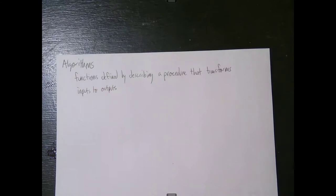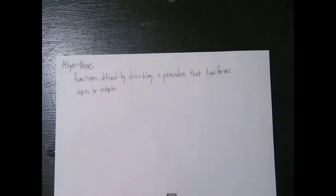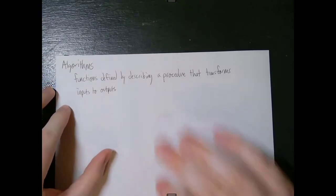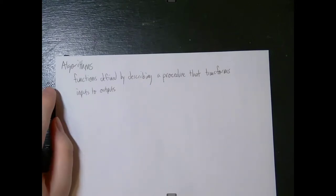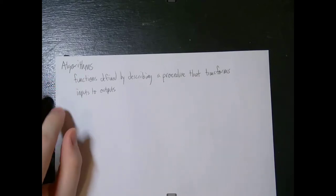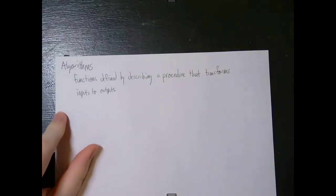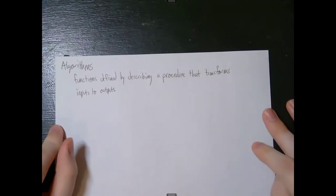However, what makes an algorithm special is that we define what an algorithm does by describing a procedure that transforms inputs to outputs. So rather than doing something like f from the real numbers to the real numbers such that f(x) equals e^x or something like that, what we're doing is actually saying these are the steps that our function takes in order to take an input and give us an output. Algorithms are just really fancy functions.